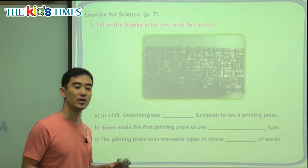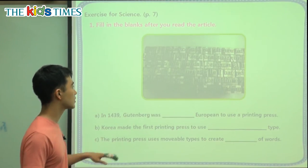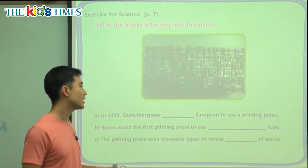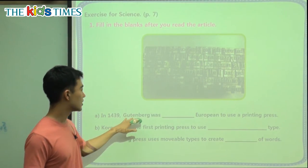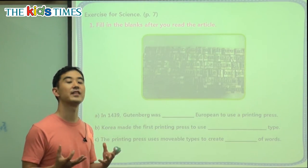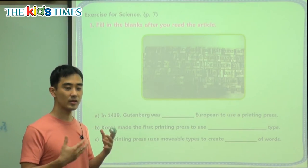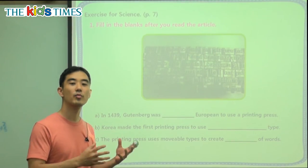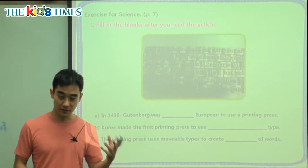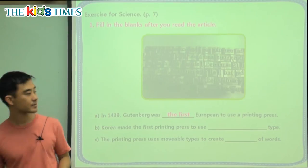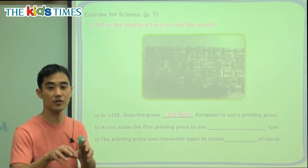Let's look at some questions. In 1439, Gutenberg, that German man, was the blank European to use a printing press. Gutenberg was the inventor — he thought of the machine and he made the machine. If he made it, nobody used it before him. He was the very first person to use a printing press because he invented it, he made it, and he was the first to use it.